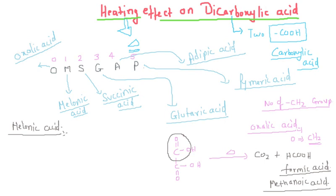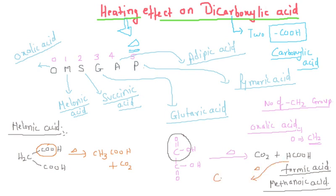For malonic acid, the code number is 1, meaning it has one CH2 unit. On heating, we remove CO2, and the product is CH3COOH — acetic acid. One thing to keep in mind: on heating at a higher temperature, formic acid gives CO2 and H2O.